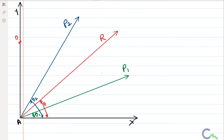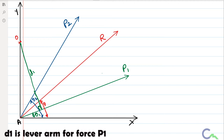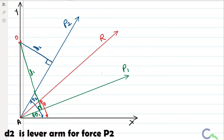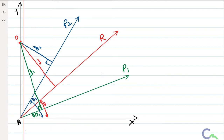If this is the moment center, then this will be the lever arm for force P1, which I will denote as D1. The lever arm is always perpendicular to the line of action of the force, so this angle is 90 degrees. Similarly, for P2, I will take D2 as the lever arm, which is also perpendicular to the line of action of P2. For the resultant, I will take D as the lever arm. The point where D1 touches force P1 is B1, the corresponding point for P2 is B2, and for the resultant it is B.